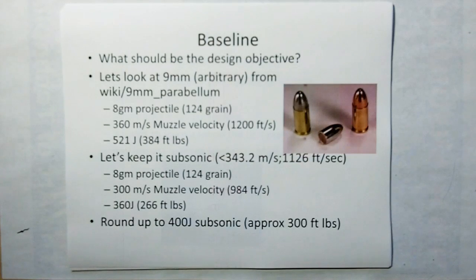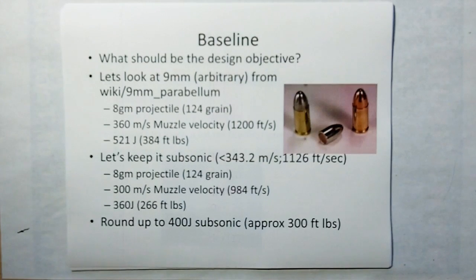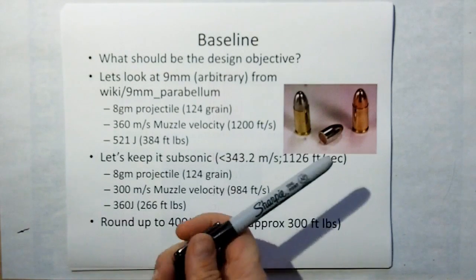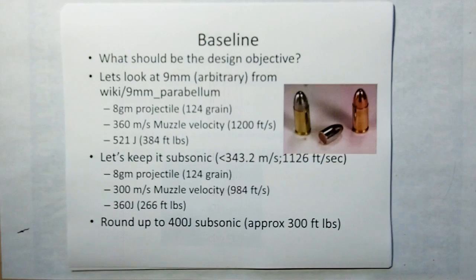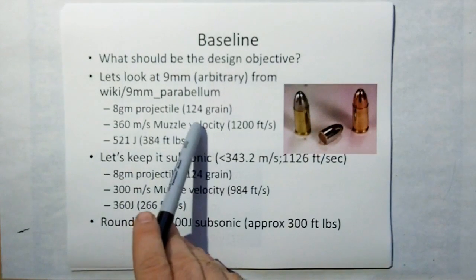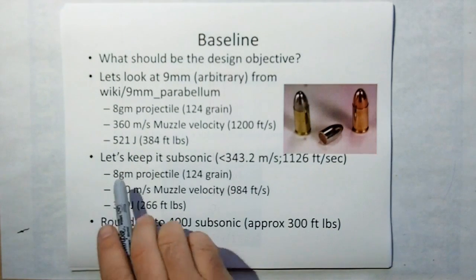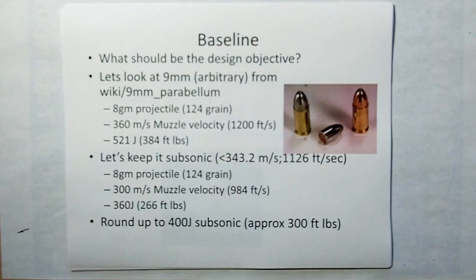So as a baseline, what I chose is just to take a look. Let's take a 9mm projectile just to get a baseline of what the energies of a gun are. If we look at the 9mm Parabellum, which is used by NATO forces today, it's got an 8-gram projectile, 124 grain, at 360 meters per second muzzle velocity, 1200 feet per second, which is about 521 joules or 384 foot-pounds of energy at the muzzle.